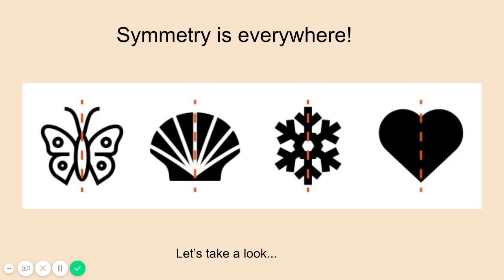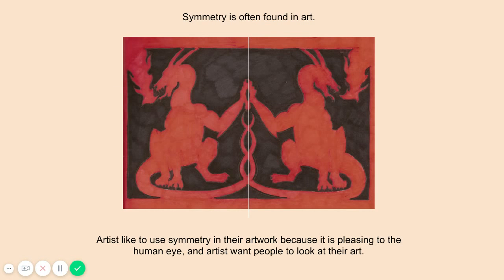Symmetry is everywhere — let's start taking a look. Symmetry is often found in art. Artists like to use symmetry in their artwork because it is pleasing to the human eye, and artists want people to look at their artwork and enjoy looking at it. You can see that this artwork has symmetry — there are two dragons on both sides. If we folded this in half, it would match up exactly.